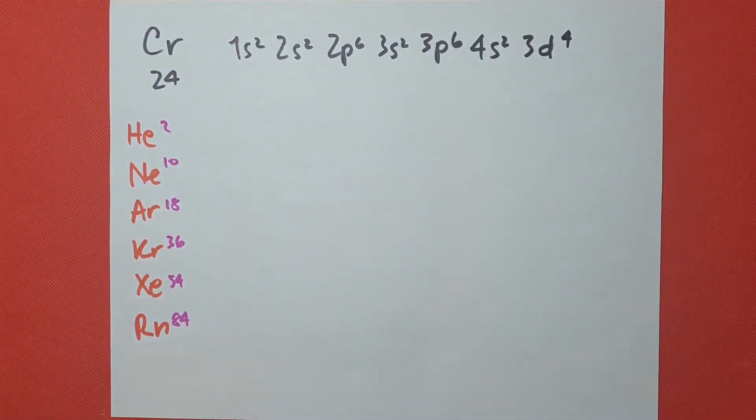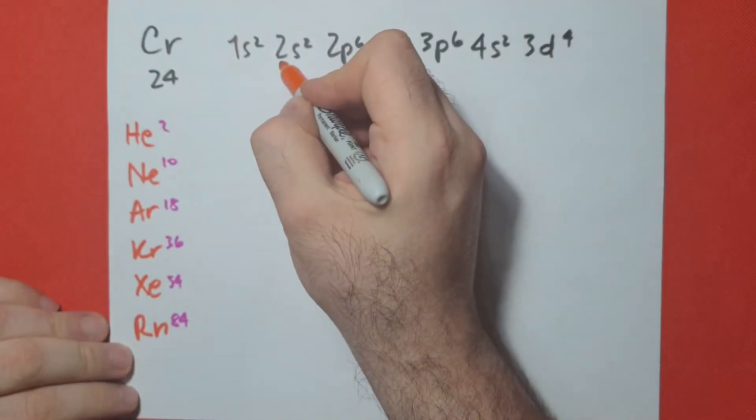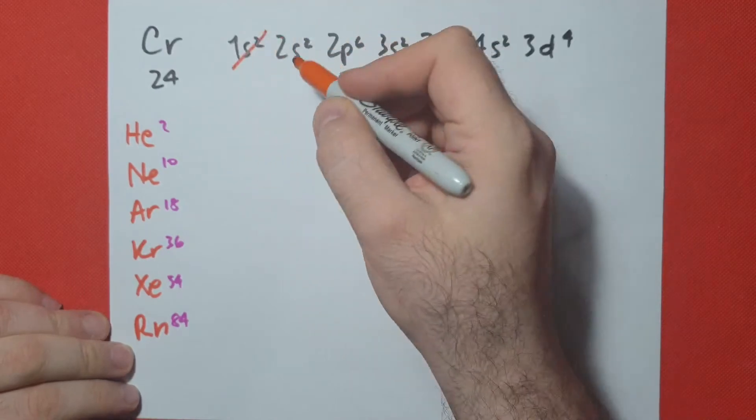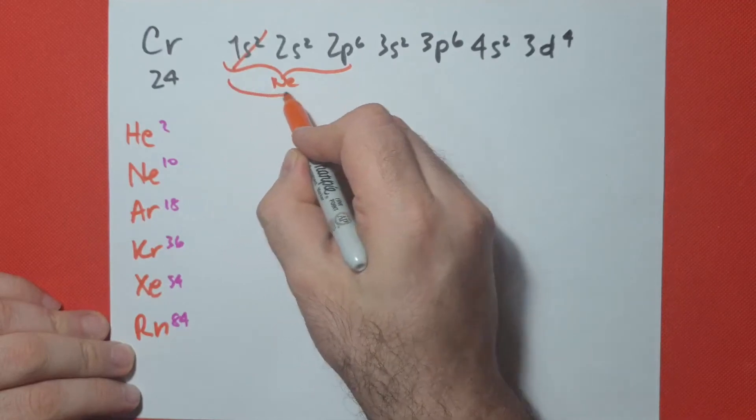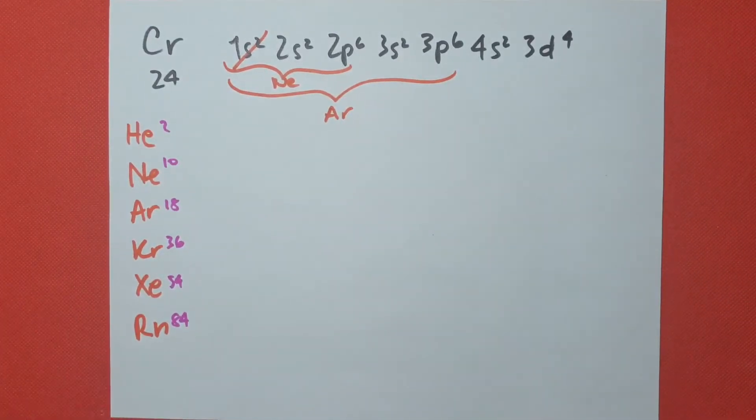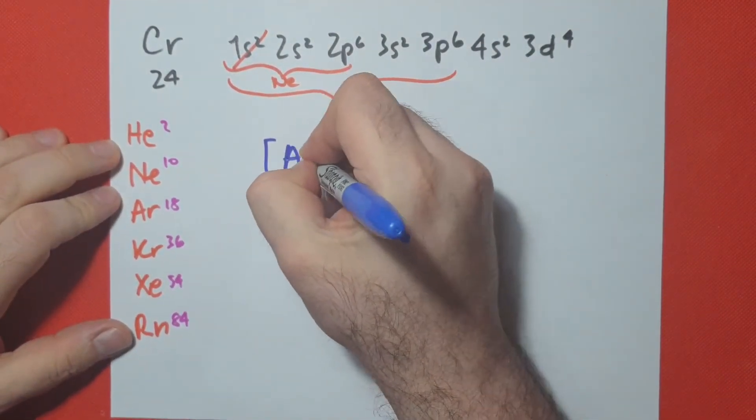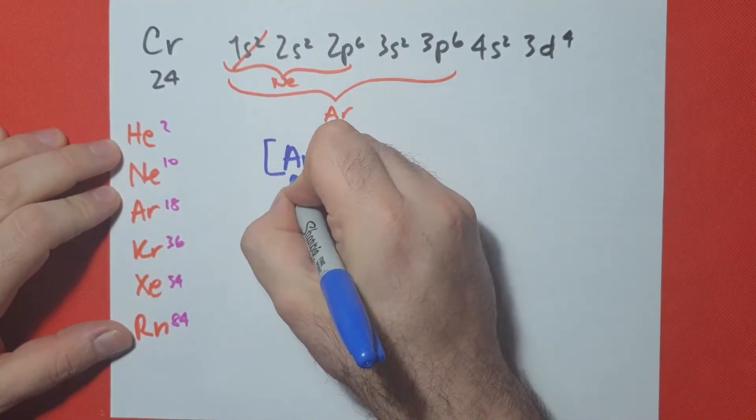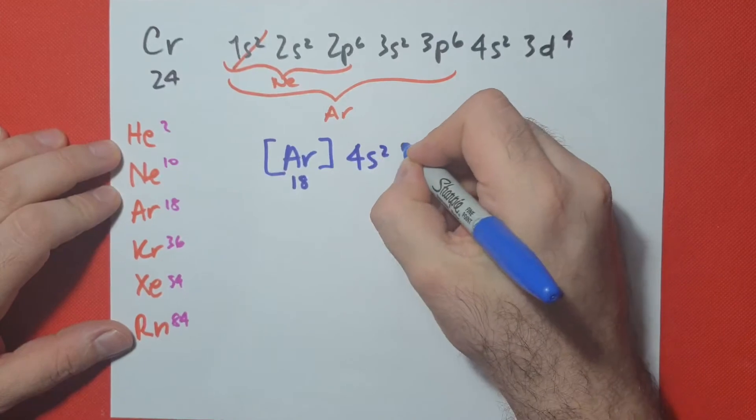Remember, we can abbreviate all of this because this is helium up to this one, neon, and with all of this, it's argon. So that's the highest we could go. So we can abbreviate this as argon with its 18 electrons. And then we have 4s2, 3d4.